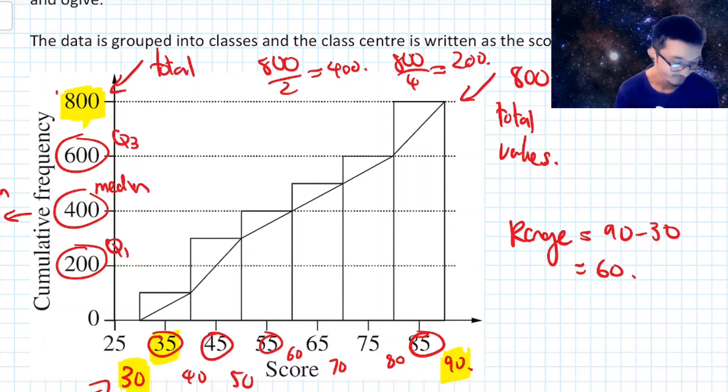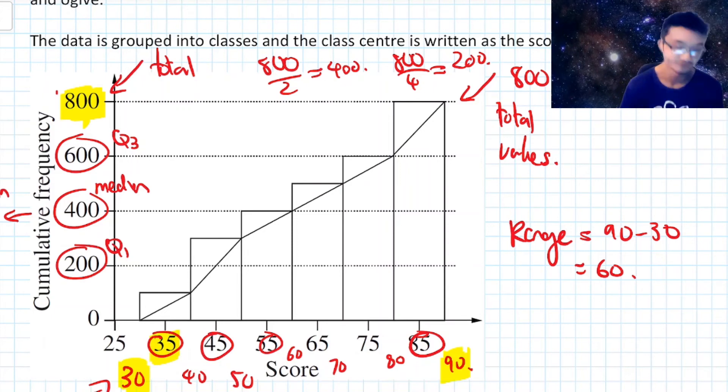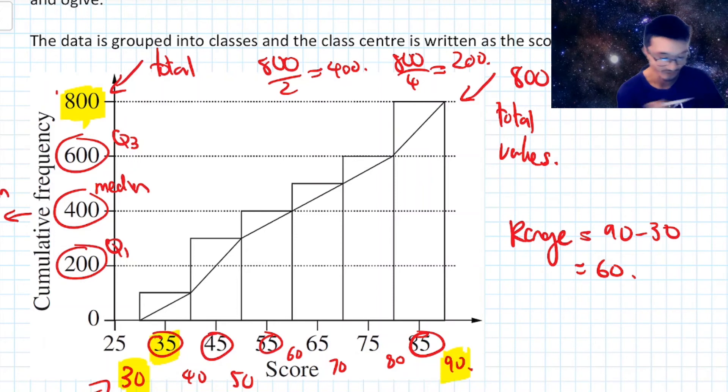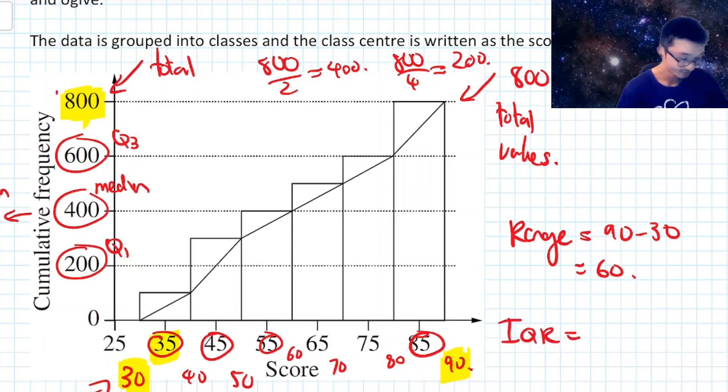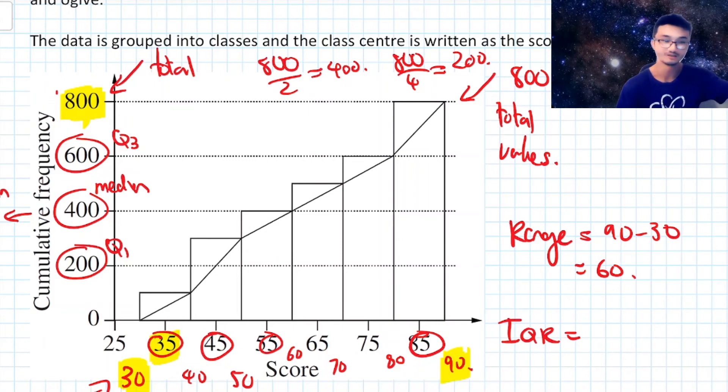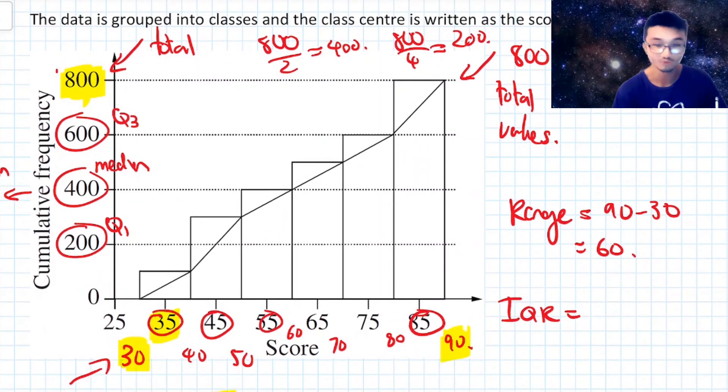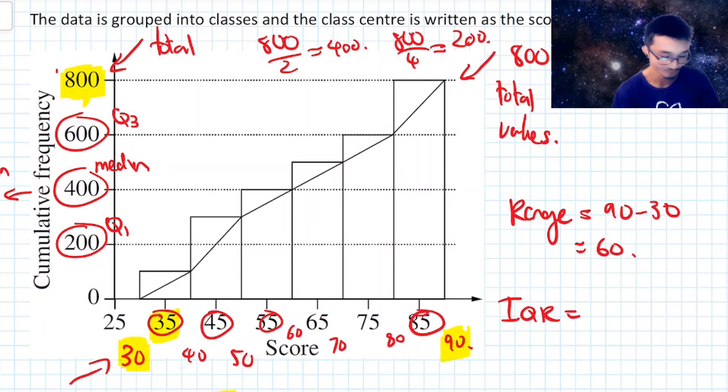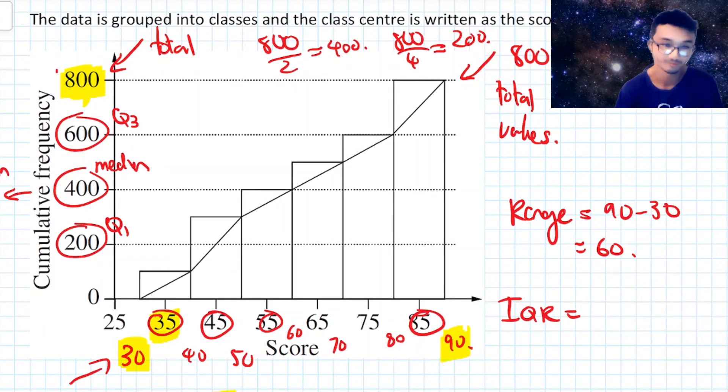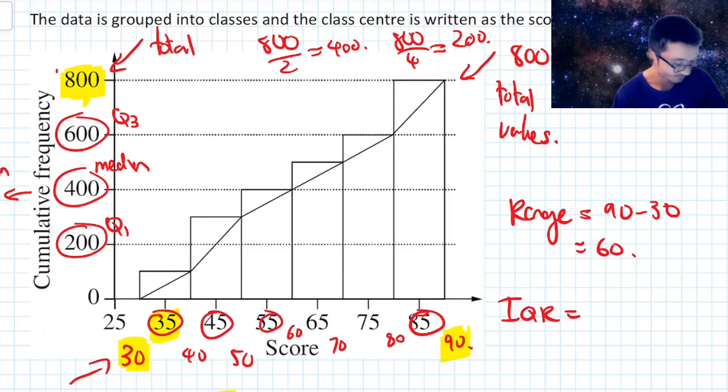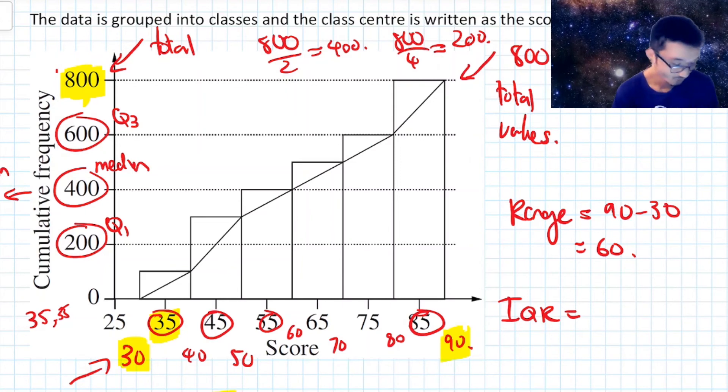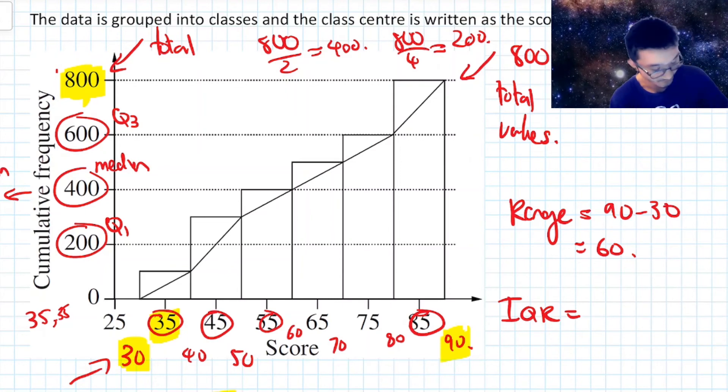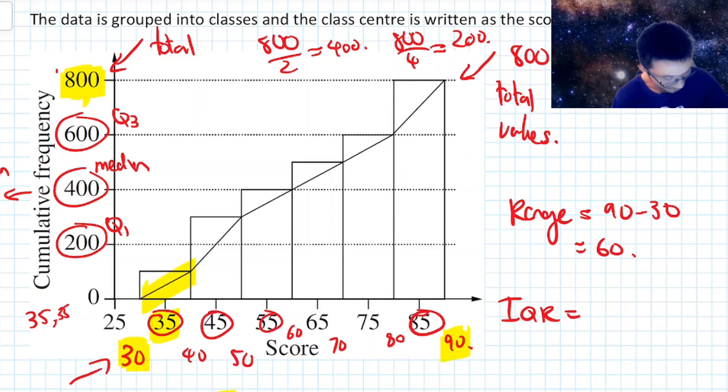At this point, now that we have Q1 and Q3, in terms of their positions, remember, I need the actual values. So just to emphasize again, this is telling me the frequency, it's telling me how many values there are. But the scores are what I'm particularly interested in. Like before, when I did 90 minus 30, the scores are what I'm interested in. Now, I don't want to have to write out 35, 100 times. That's why we have this graphical representation. So what I have to do is I use the graph to estimate it. And this is where the ogive comes in. This is very important to determining our interquartile range.